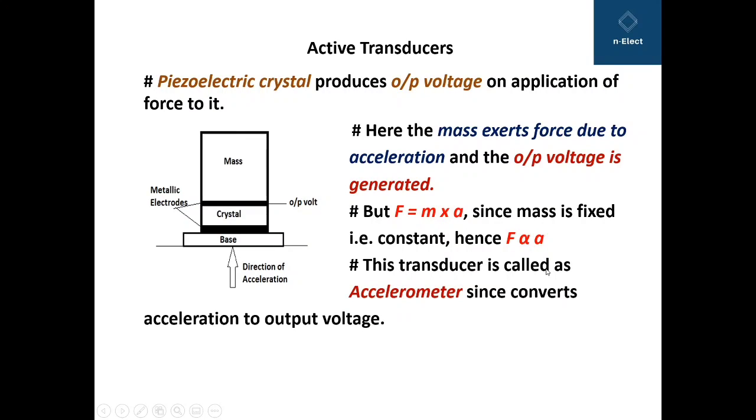This transducer is called an accelerometer since it converts acceleration to output voltage. It requires no external power source and therefore it is called an active transducer, meaning it is not depending on an external source.